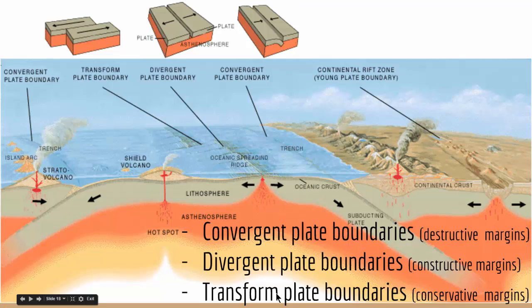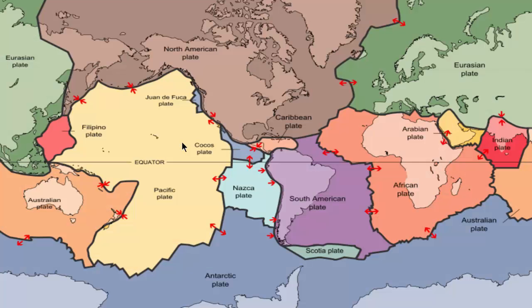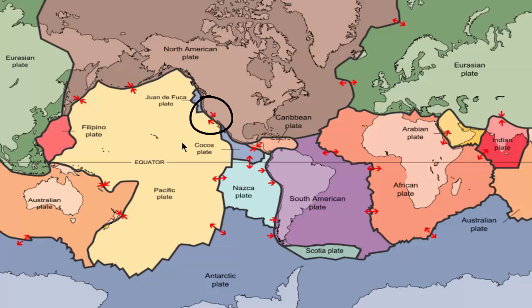A transform plate boundary is when two plates slide past each other, as shown here with one plate on each side. So at the boundaries of plates, convergent, divergent, and transform plate boundaries all occur. We now understand that plates compose the surface of the Earth, continents are on these plates, and since the plates are moving, the continents also move — giving us continental drift.